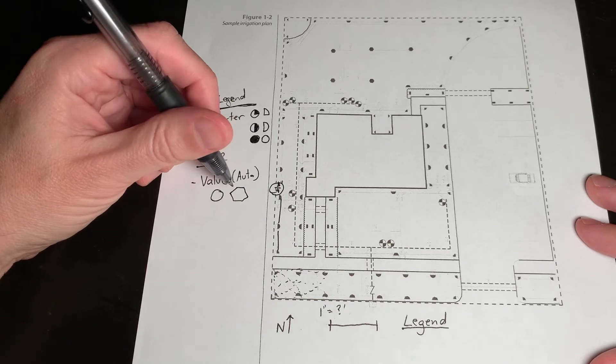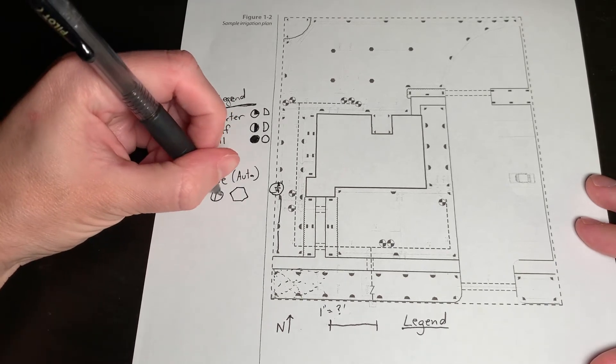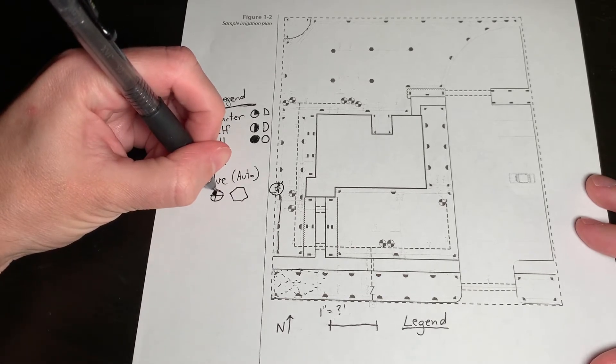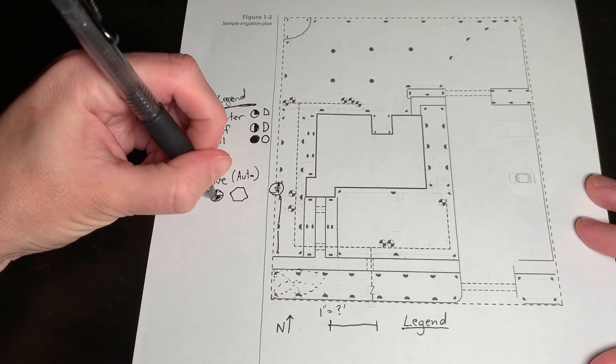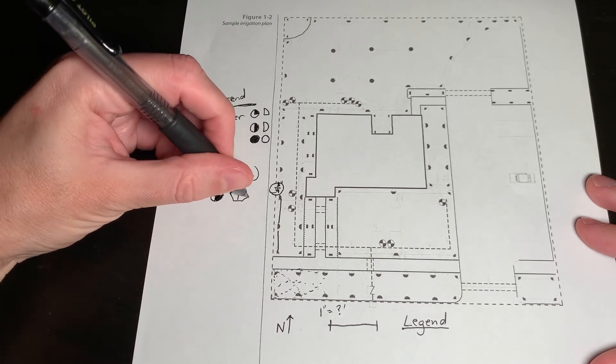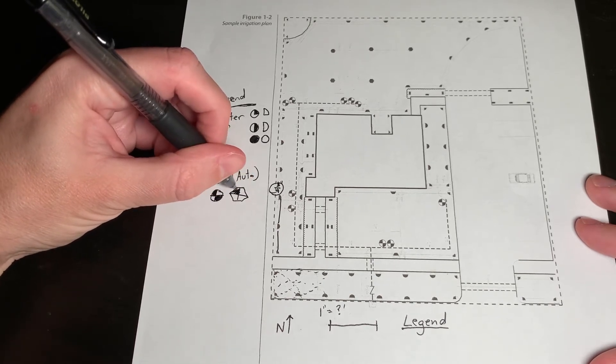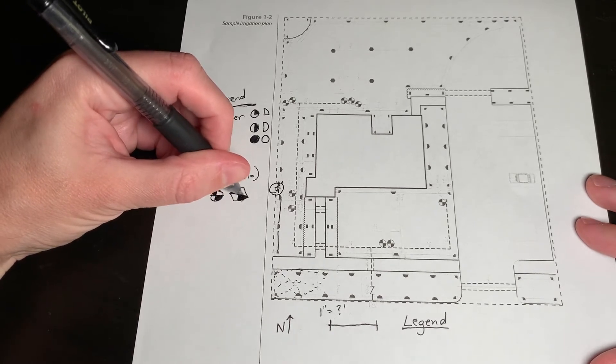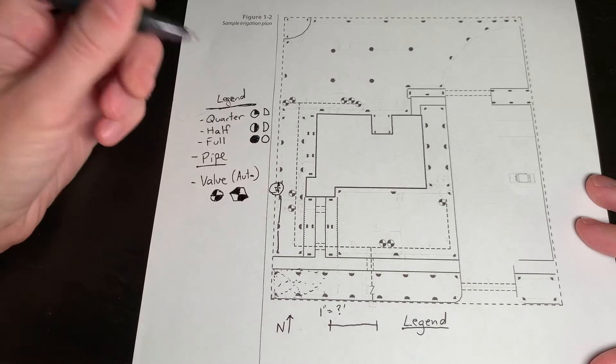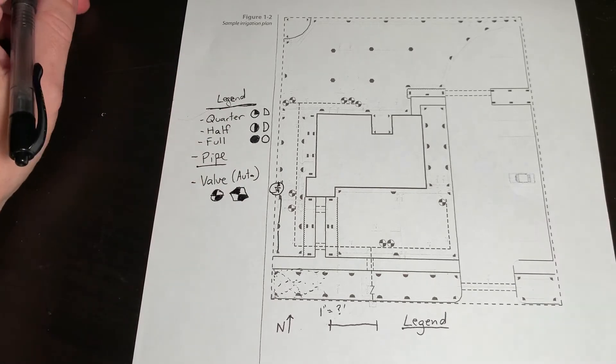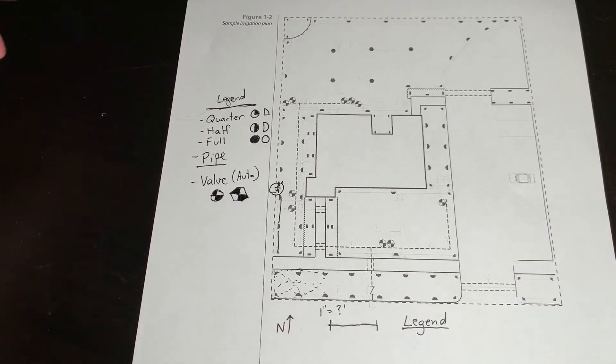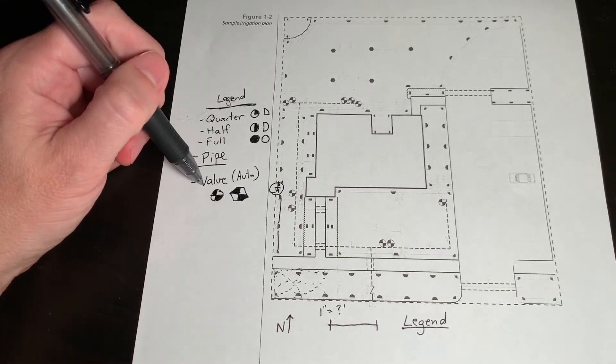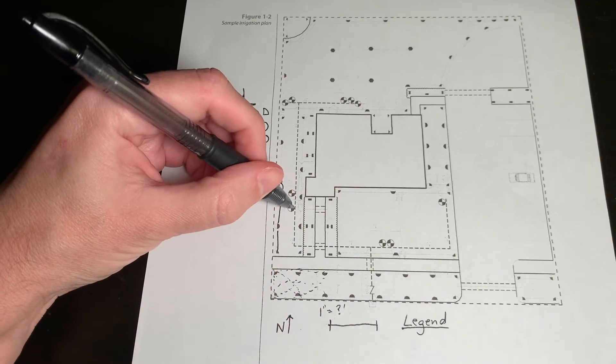Oftentimes it is circle as well. Now a proper plan would have this labeled and drawn. If it's hand drawn, it will be with a template. If it is computer drawn, it'll obviously be very clear and easy to read. So the valves are these here.